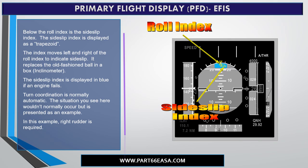Below the roll index is the side slip index. The side slip index is displayed as a trapezoid. The index moves left and right of the roll index to indicate side slip. It replaces the old-fashioned ball-in-a-box or inclinometer. The side slip index is displayed in blue if an engine fails. Turn coordination is normally automatic. The situation you see here wouldn't normally occur, but is presented as an example. In this example, right rudder is required.